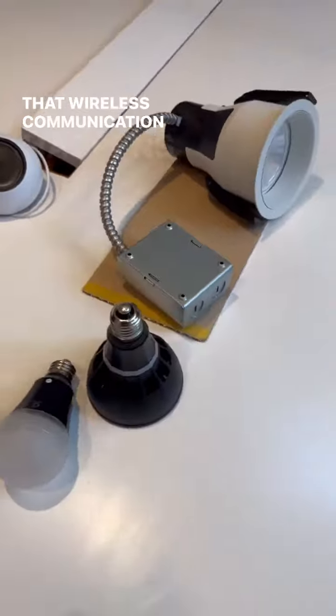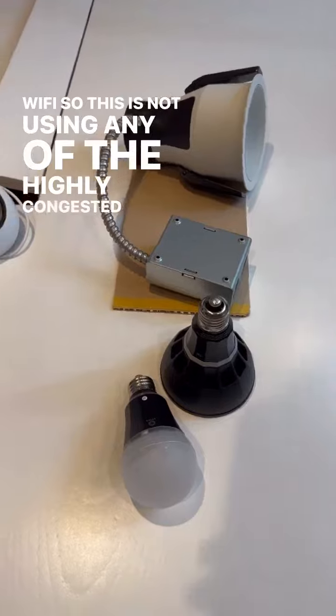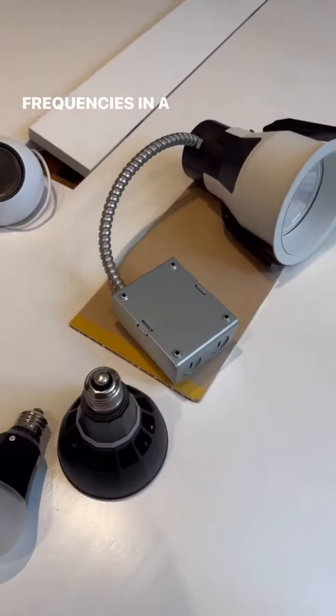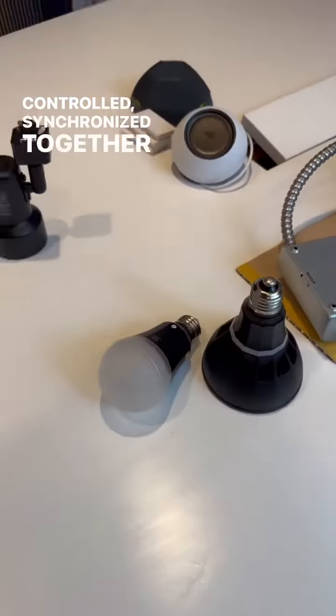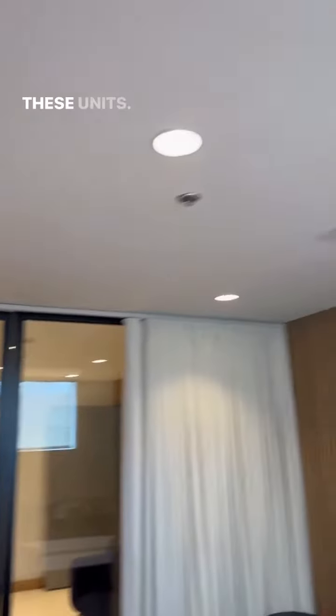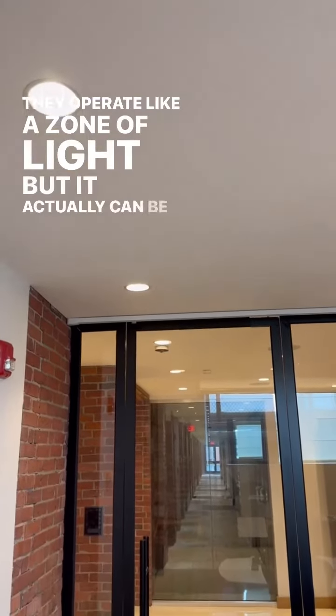That wireless communication happens on a spectrum that's not Wi-Fi, so this is not using any of the highly congested frequencies in a home, but allows it to be very well controlled and synchronized together. So you can have many of these units. They operate like a zone of light, but can actually be individually controlled.